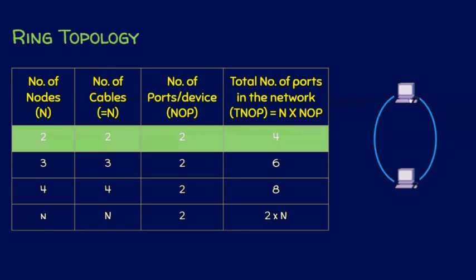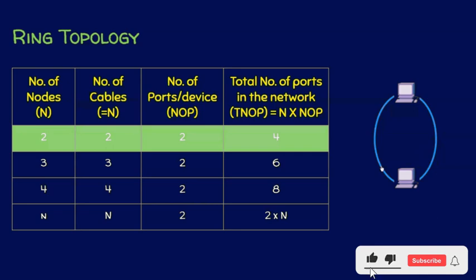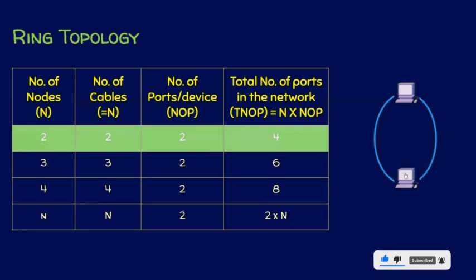Some may wonder: one cable is enough for two nodes, so why do we need two cables? Actually, we aren't concerned about peer-to-peer networking. This is a ring topology, which means it should be closed — there must be a cycle.